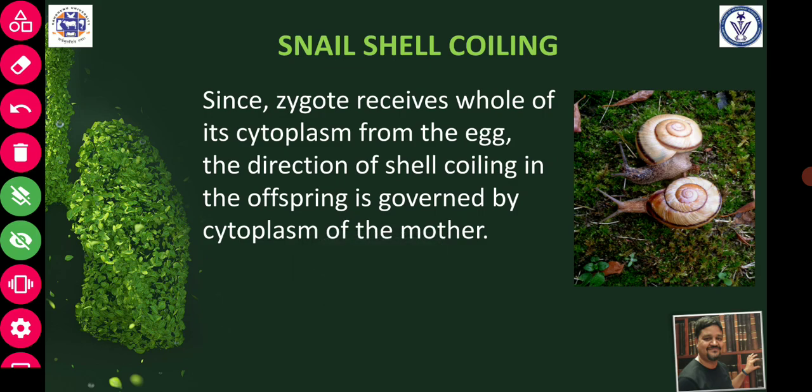Since the zygote receives all of its cytoplasm from the egg, the direction of cell coiling in offspring is governed by the cytoplasm of the mother. So in snail shell coiling, the coiling direction is governed by the cytoplasm of the mother.